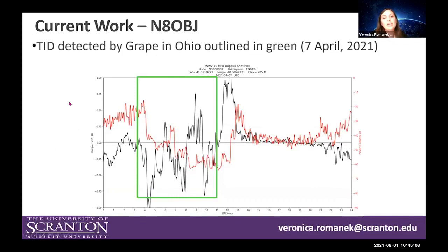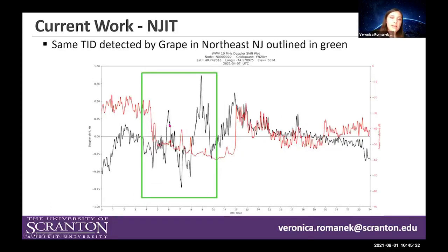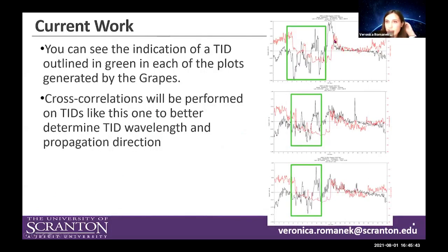Here is data from the various GRAPEs. This one is from NAOVJ, located in Colorado, and in the green box I've highlighted a very clear TID — a very big oscillation from April 7th, 2021. The same TID appears at KD2UHN on the same day, and we see it again in the Doppler-shifted carrier frequency recorded by the GRAPE at NAOVJ in northeastern New Jersey. I lined them up so you can clearly see the similarity between the TIDs.